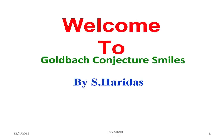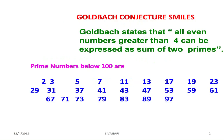Goldbach Conjecture. Goldbach states that all even numbers greater than 4 can be expressed as the sum of 2 primes.